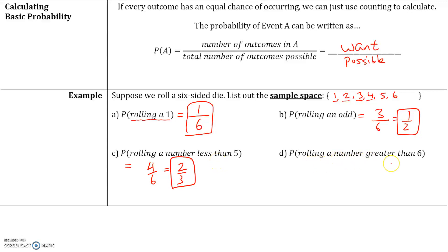Probability of rolling a number greater than six: on a die, we only have up to six. The number of outcomes in event A is zero, because we can't roll a number greater than six. Total outcomes is six. Zero divided by six equals zero, which means that this event is impossible. When the probability of an event is zero, that means the event is impossible.